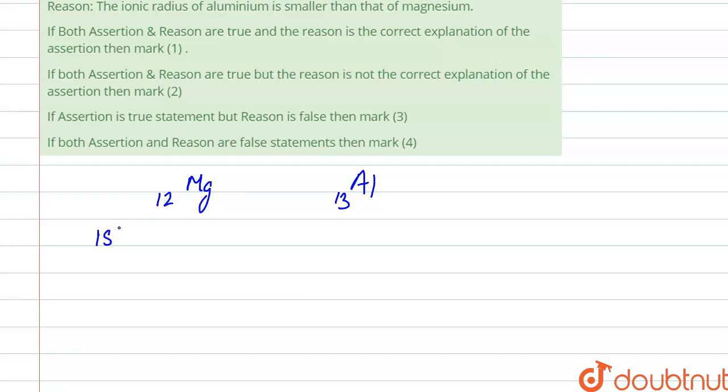So 1s² 2s² 2p⁶ and 3s². Here for aluminium, 1s² 2s² 2p⁶ 3s² 3p¹. That is 10 plus 2 and 10 plus 2 plus 1, which is 12 and 13. So this is the electronic configuration of both the elements.